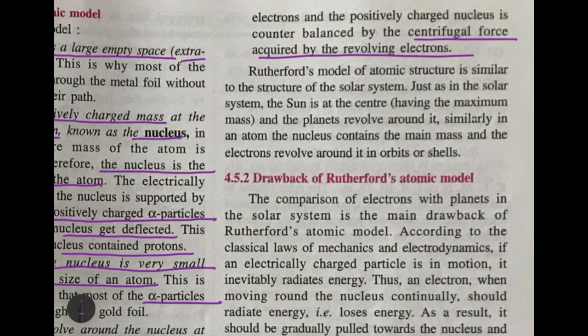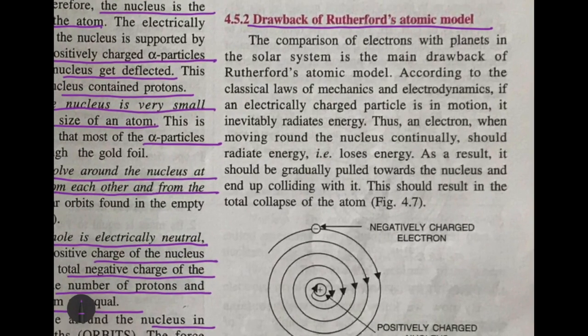Rutherford's model of atomic structure is similar to the solar system: just as the sun is at the center with maximum mass and the planets revolve around it, in an atom the nucleus is at the center with maximum mass and the electrons revolve around it in orbits or shells.